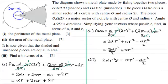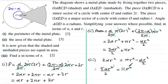Adding half alpha r squared to both sides gives 5 alpha r squared over 2 equals pi r squared. Since every term contains r squared, we divide both sides by r squared. Then multiplying both sides by 2 gives 5 alpha equals 2 pi. Dividing both sides by 5 gives alpha equals 2 pi over 5.